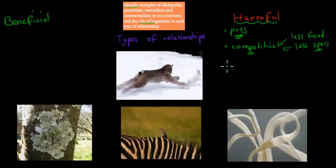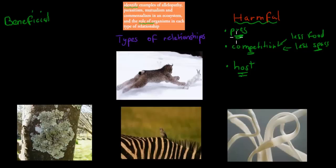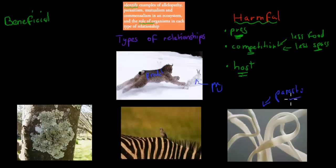We also have the host. A parasite lives on the host — if you're the host, that's harmful because you're being fed off by the parasite. So you don't want to be the host in a parasite-host relationship. For example the predator is the cat, and the prey is the rabbit. The parasite feeds off the host, which is bad for the host because it's just being fed off.